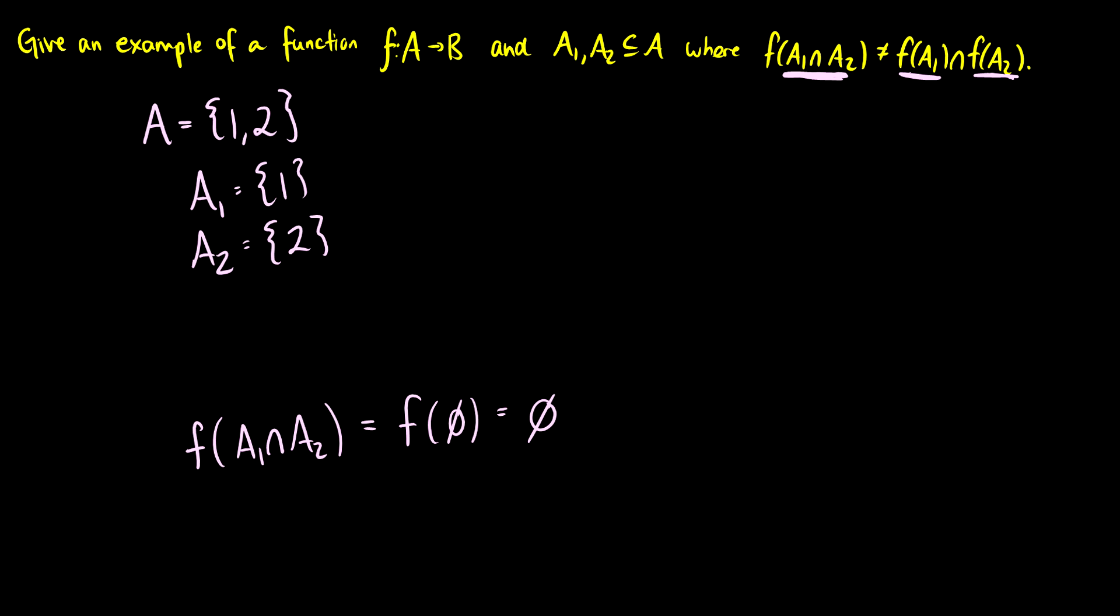So now we also need to figure out what f(A1) and f(A2) are. So we need our codomain B, and what would be nice is if we could get 1 and 2 to map to the same thing. So we're going to say that B is just {0}.